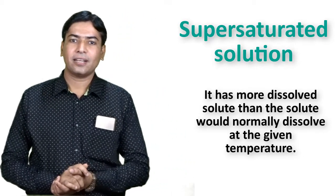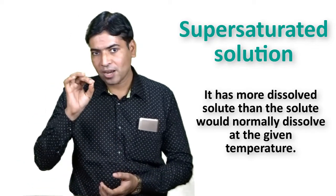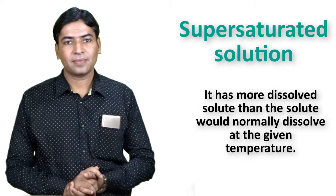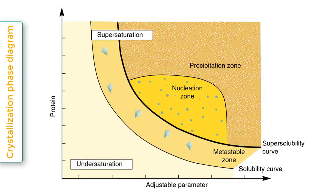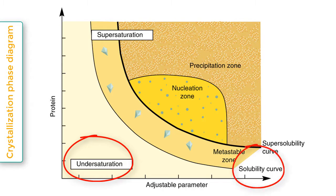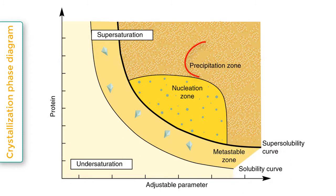If a small quantity of solute is added to a supersaturated solution, the excess solute will immediately crystallize out, which is a fast process. A crystallization phase diagram shows where undersaturation, saturation, and supersaturation occur at certain concentrations. Concentrations below the solubility curve result in an undersaturated solution. Saturation occurs when the concentrations are on the solubility curve. If the concentrations are above the solubility curve, the solution is considered supersaturated.